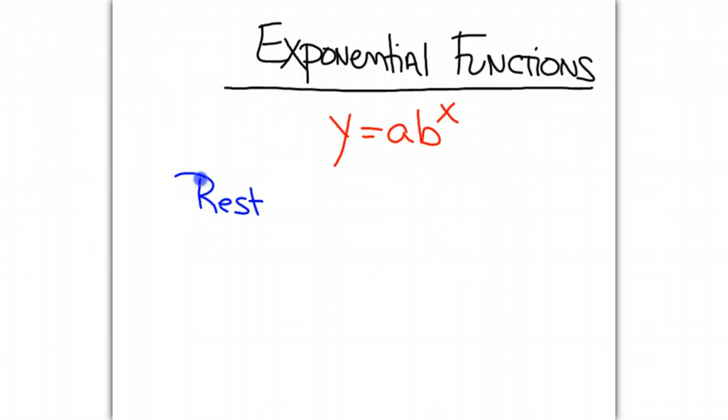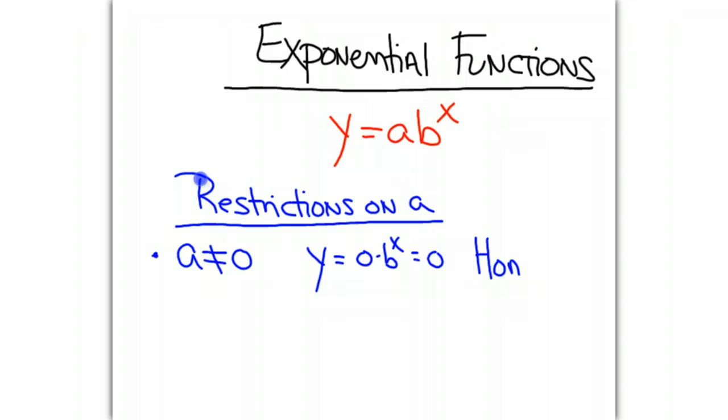So first, let's talk about the restrictions on our a value. For our restrictions on a, we have that a cannot equal 0. That's our first restriction. If we let a equal 0, we would have y equals 0 times b to the x, which is equal to 0. This would give us the horizontal line y equals 0, and that is not an exponential function. So we can't let a equal 0.